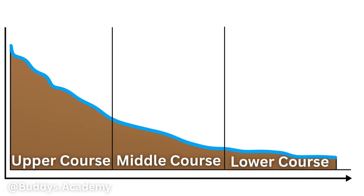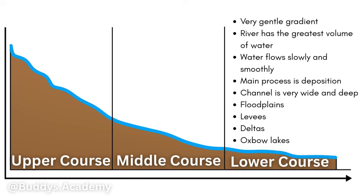Now in terms of your lower course, that's going to be found near the mouth of the river, either when it meets a lake or the ocean. The lower course is going to have a very gentle and almost flat gradient, and that means that the river is going to have the greatest amount of volume in this course. Your water is going to flow slowly and smoothly, meaning it's going to have a very laminar flow. And instead of erosion taking place, your main process at this course is going to be deposition — that's when all your sediments are going to be laid down. And because your channel is going to be so wide and deep, floodplains, levees, deltas, and also oxbow lakes are all going to take place in this lower course.